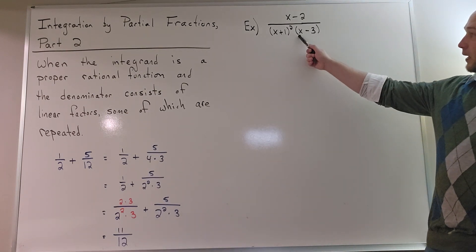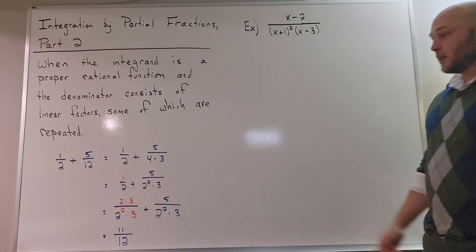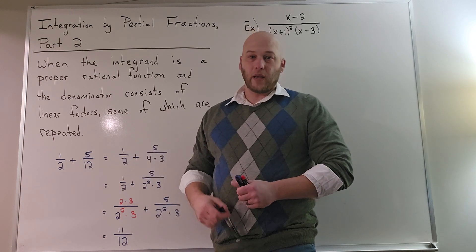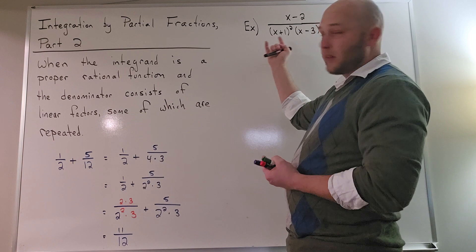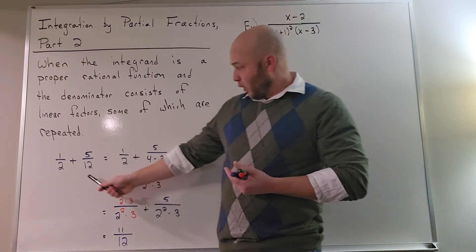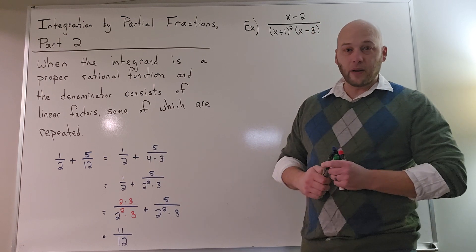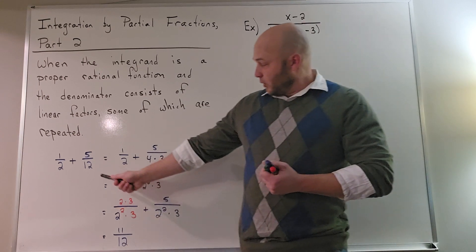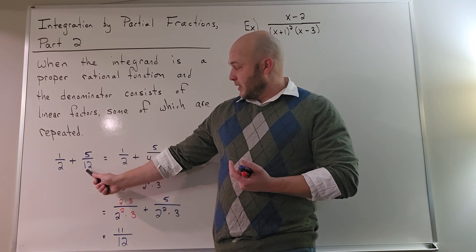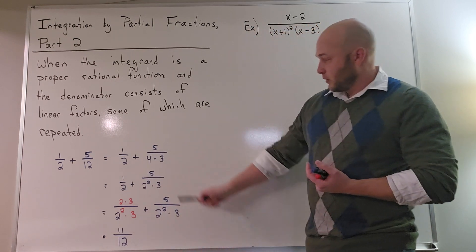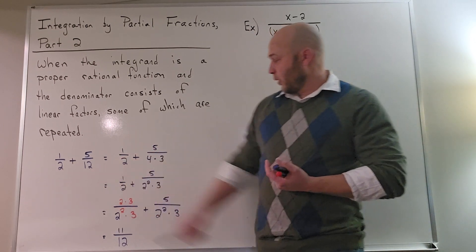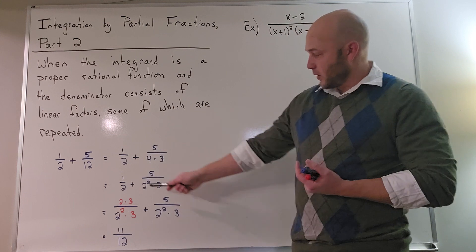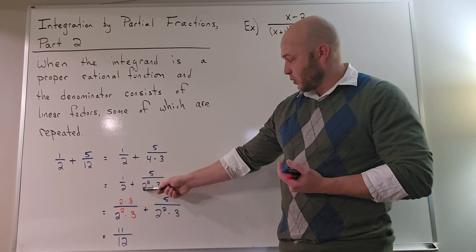Well, before we get into analyzing this expression right here, let's take a look at the following addition of fractions: one half plus five twelfths. I want to kind of go through the details and then we're going to make an analogy with the one up top. First and foremost, if I want to add those two, I need to find a common denominator. To do that, we're going to find the least common multiple of the two denominators. What I'm going to do is decompose 12 as its prime factorization. 12 of course is 4 times 3, and 4 is 2 squared.